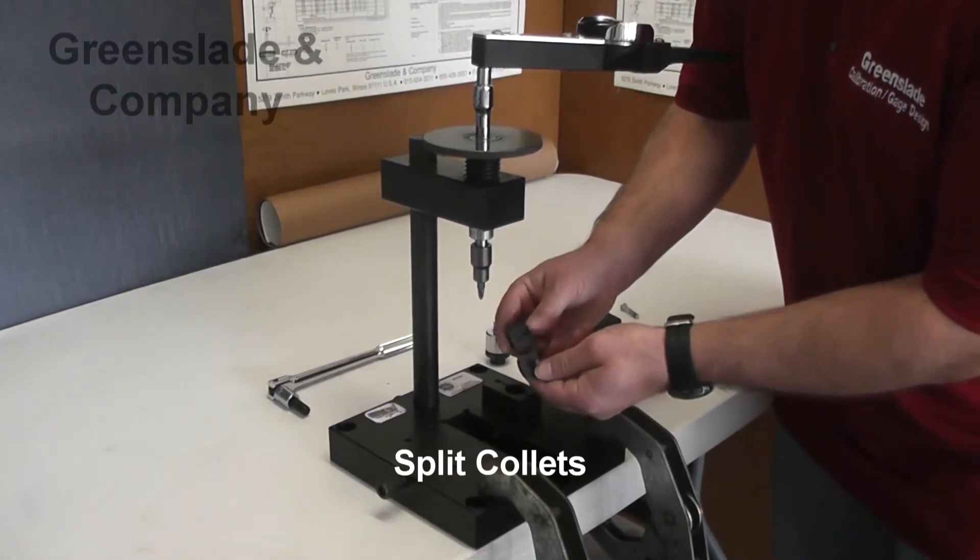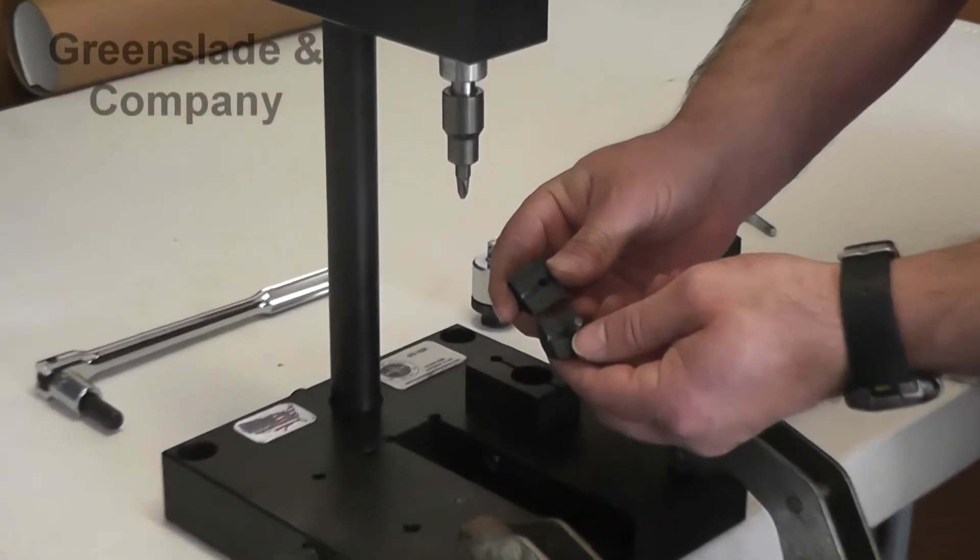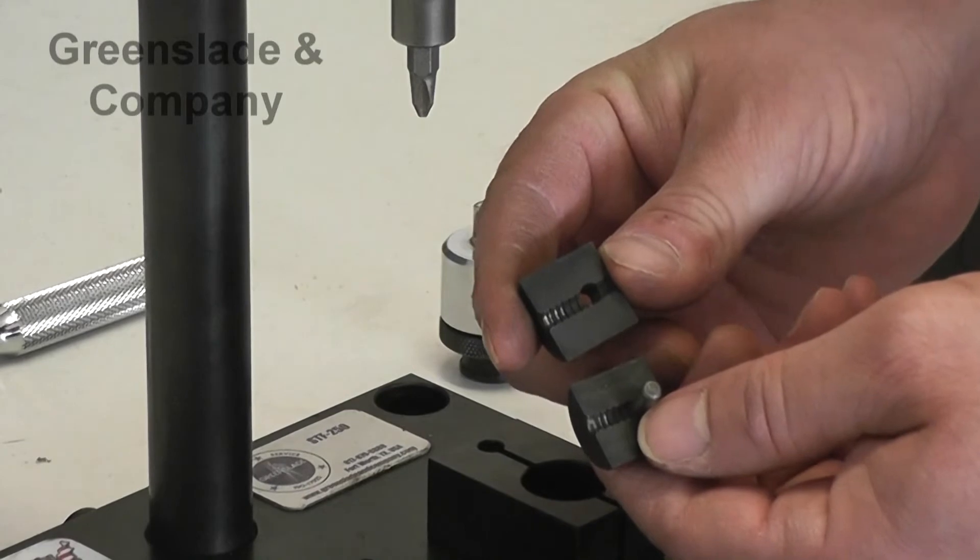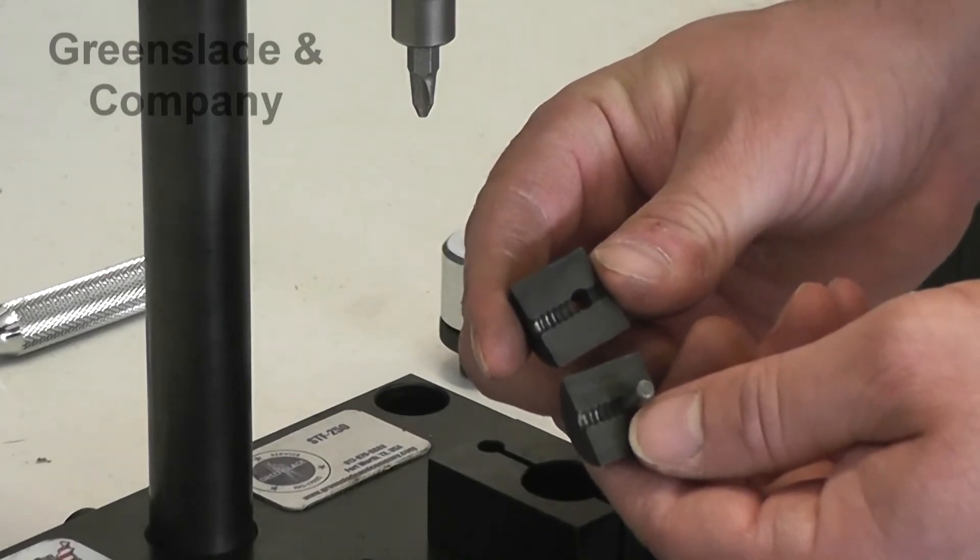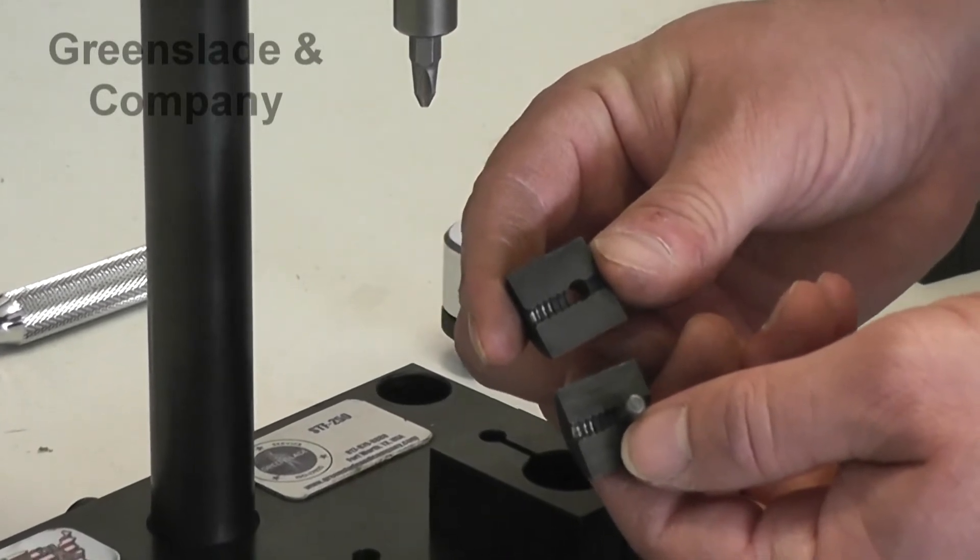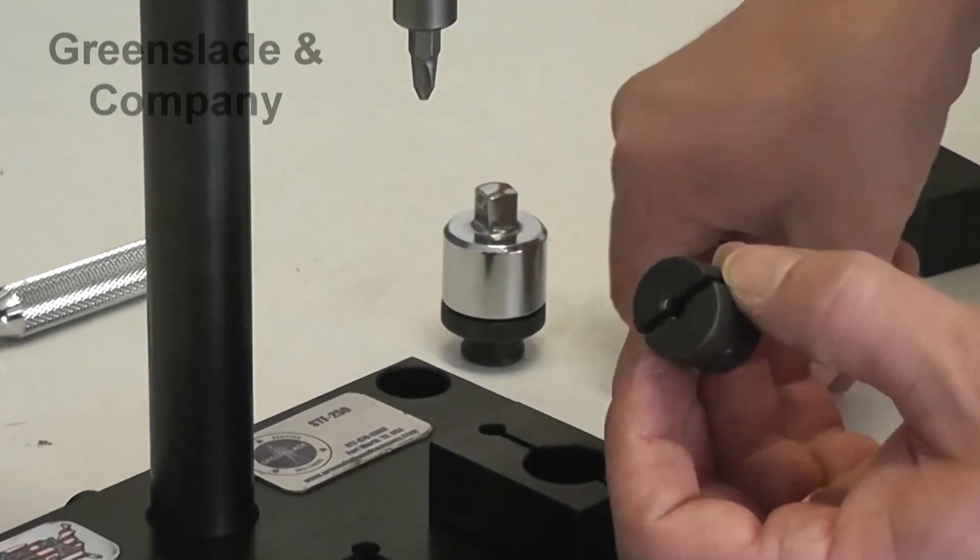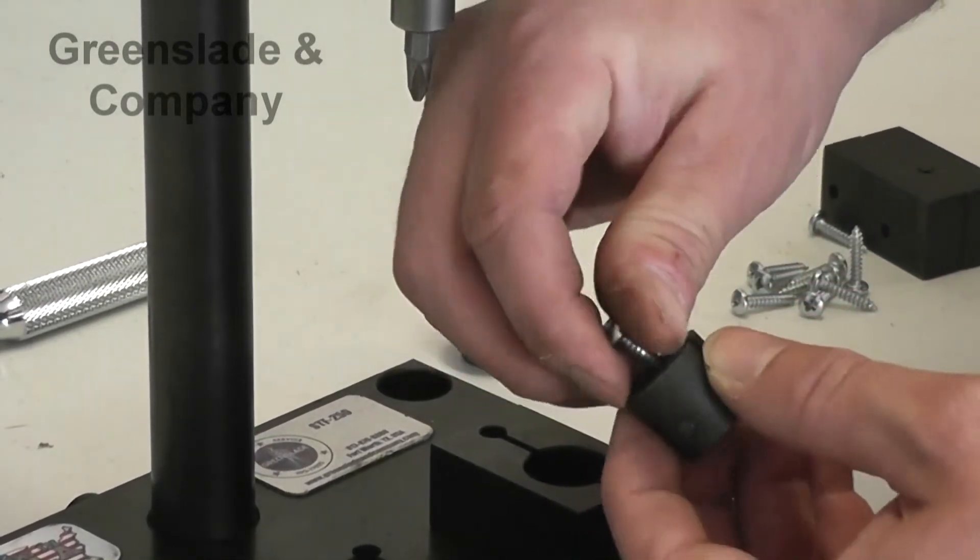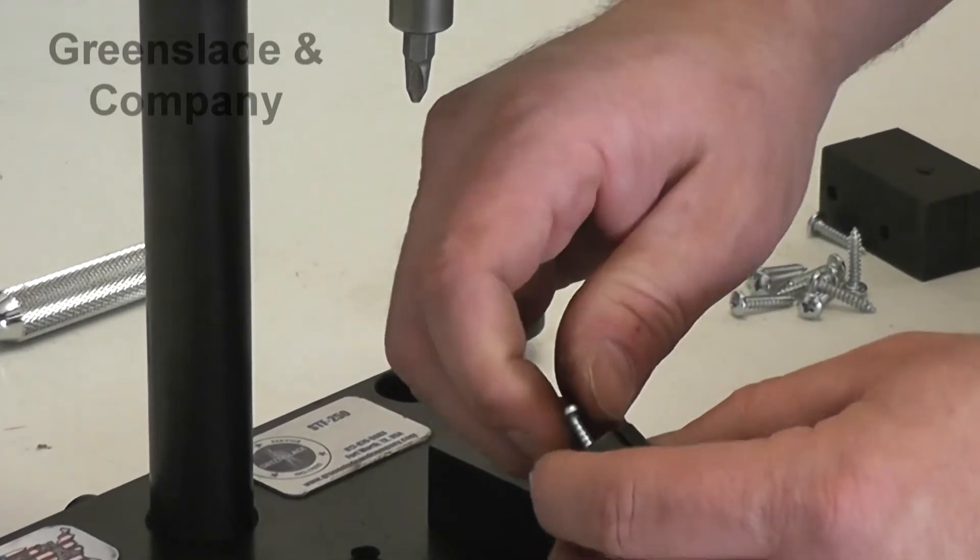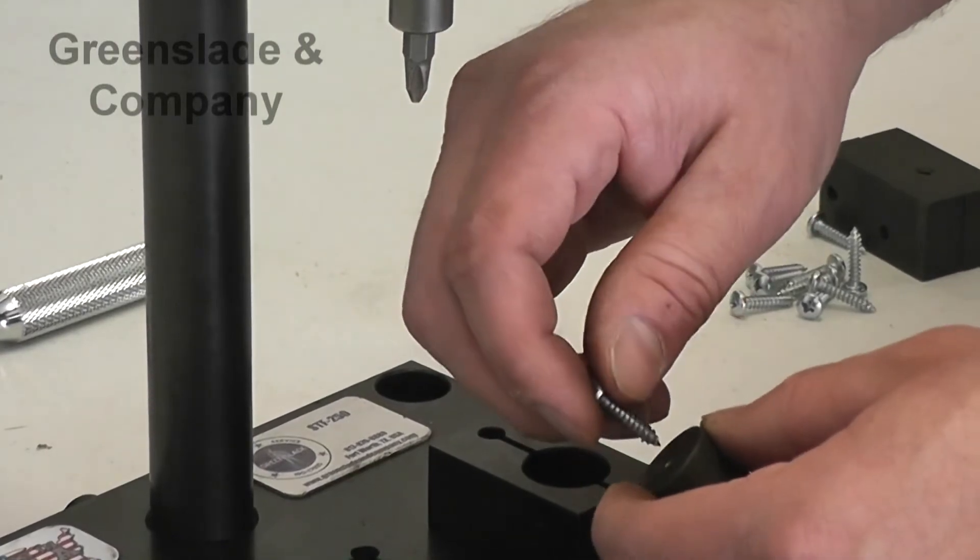A little bit more on the split collets. The standards tell us that we need to clamp the screw without deforming the threads. The only way to really do that is to have something that's already tapped. We've developed these split collets that act as little vices with threads in them, so they clamp around the screw threads without deforming them. They're made of hardened tool steel and annealed to maintain toughness so they don't crack while using them.